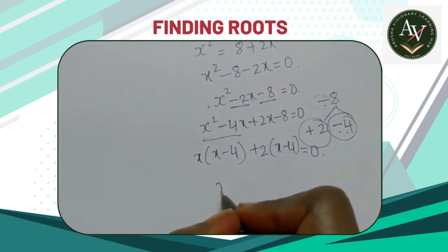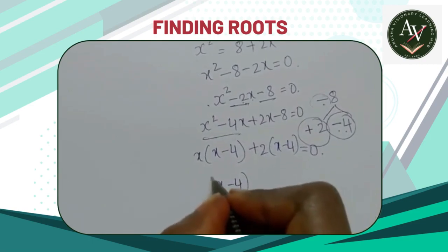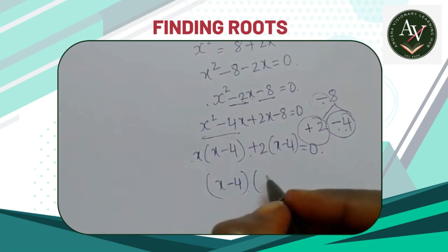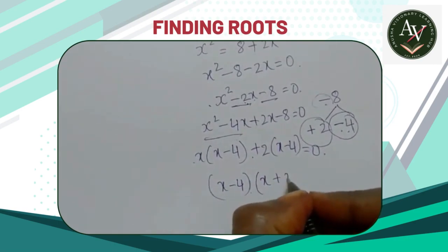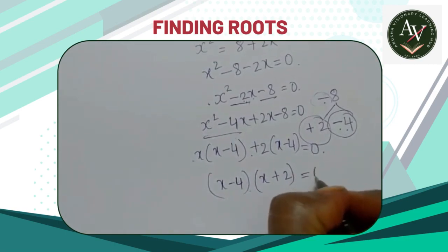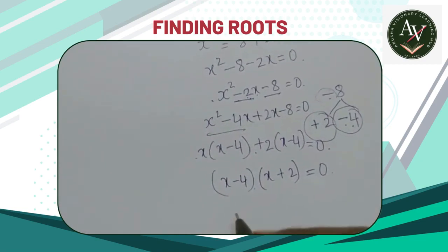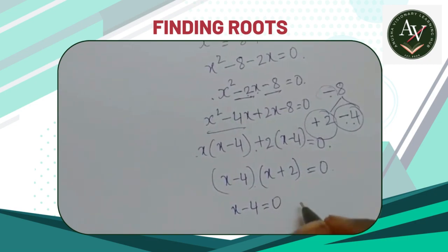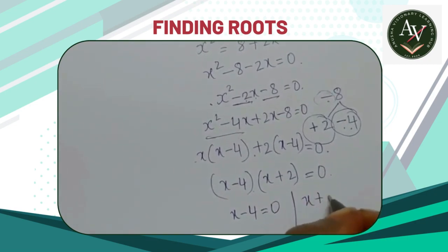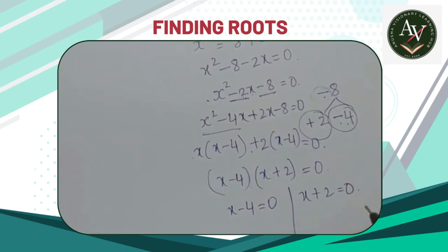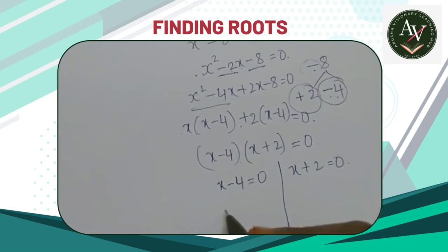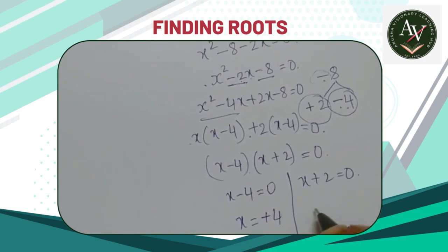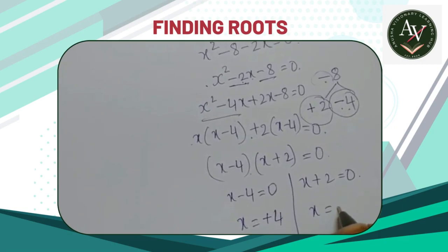Now take (x - 4) as common: (x - 4)(x + 2) = 0. Now write them: x - 4 = 0 and x + 2 = 0. Then the values of x are x = 4 and x = -2.